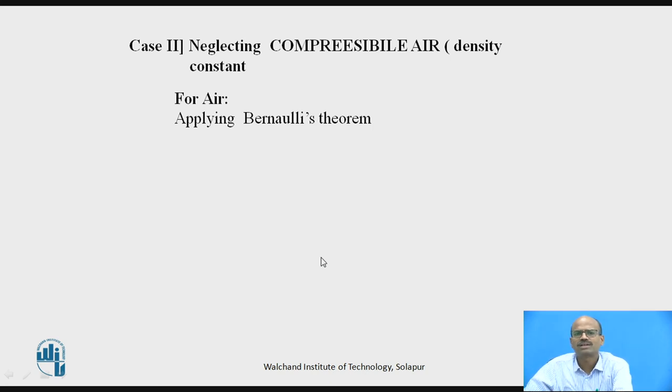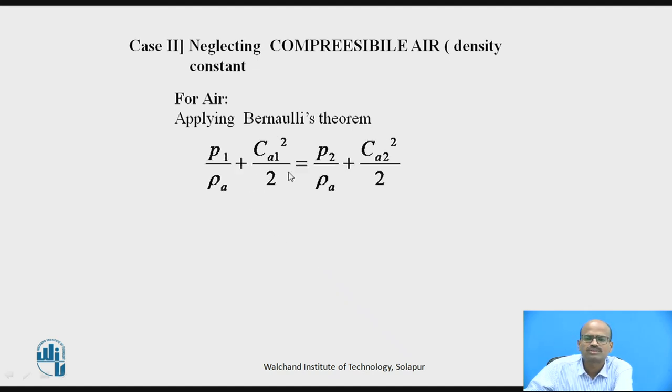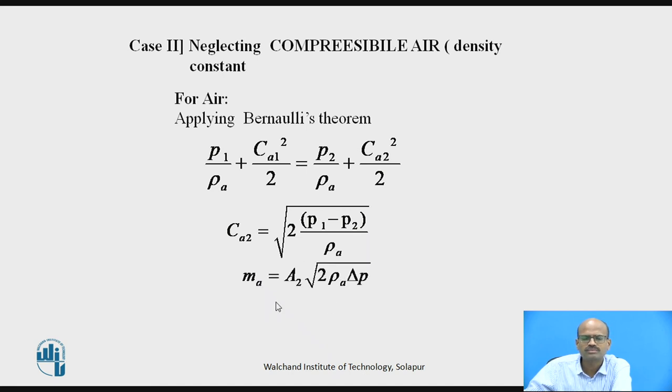Now we will consider the second case. Neglecting compressibility means the density will remain constant. Then I can apply Bernoulli's theorem. P1 by rho A plus C1 square by 2 equals P2 by rho A plus C2 square by 2. This equation is for air, that is why here suffix A is written. Neglecting C1 and writing the equation for C2: square root of 2 P1 minus P2 by rho A. From the continuity equation, I can write Ma equals A2 square root of 2 rho A delta P.